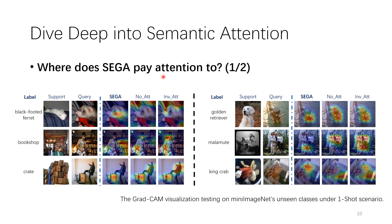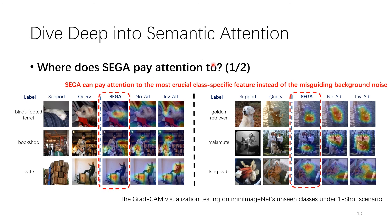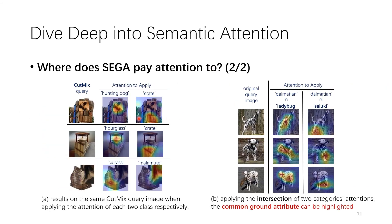Our second question is: where does SEGA pay attention to? Here we show a Grad-CAM visualization. Our SEGA can pay attention to the most crucial class-specific features instead of misleading background noise. Furthermore, even in a harder task where the query is a CutMix of two novel categories, our SEGA can still pay attention to the key part of each corresponding category. More interestingly, when applying the intersection of two categories' attentions, SEGA can pay attention to their common ground attributes.